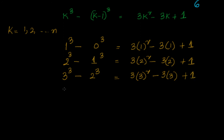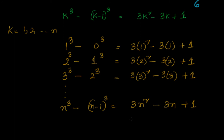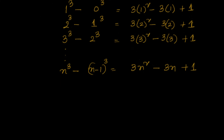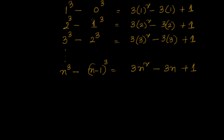Now what will be the nth term? The nth term will look like: n cube minus (n-1) whole cube equals 3n square minus 3n plus 1. Now suppose you add all the terms on the left hand side and right hand side — what happens if I add plus and plus on both sides?